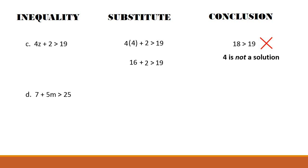Another inequality example: 7 + 5m > 25. Substitute m = 4: 7 + 5(4) = 7 + 20 = 27. And 27 > 25, which is correct — it is true. Therefore, 4 is a solution.